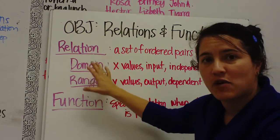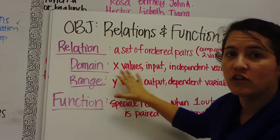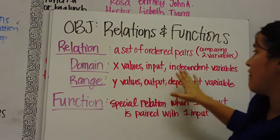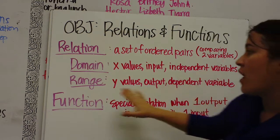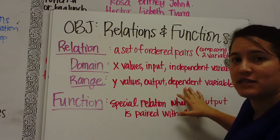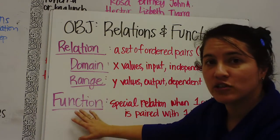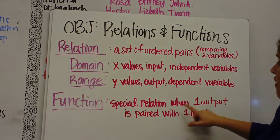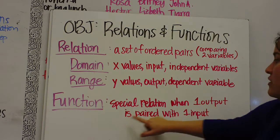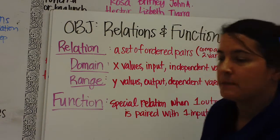Now within that relation you have domain and range. A domain are the X values, also known as the input and the independent variable. The range is the Y values, the output, and the dependent variables. A function is a special type of relation that when one output is paired with one input. And we're going to talk about that. So get your vocabulary down.